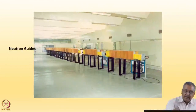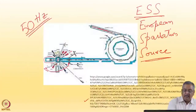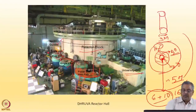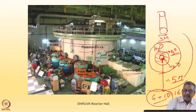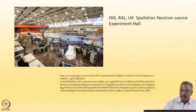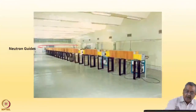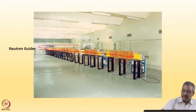Basically the reactor is on one side of a wall, and the neutron guides take neutrons out from the reactor hall. The neutrons come from the reactor and travel through the guide. This is how the neutron guides carry neutrons out from the reactor hall.